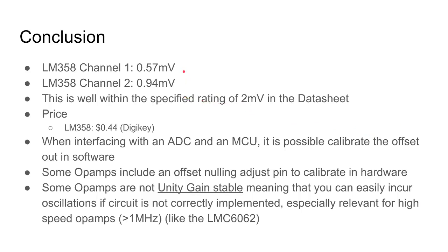In conclusion, my readings are 0.57 millivolts for the first channel and 0.94 millivolts for the second channel. If you have a similar chip at home, you can try this on a breadboard and comment on my video with your results. We could compare batches or various models of op amps and see how much they deviate from the datasheet value.